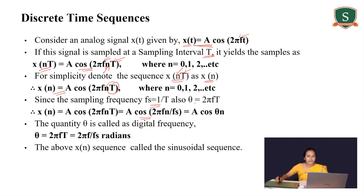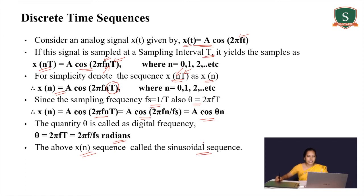We have an expression for digital frequency theta, which is equal to 2πf·T. We can replace 2πf with theta, so the discrete time sequence becomes A cos(θn), where theta has units of radians. After conversion, the x(n) sequence is known as a sinusoidal sequence.